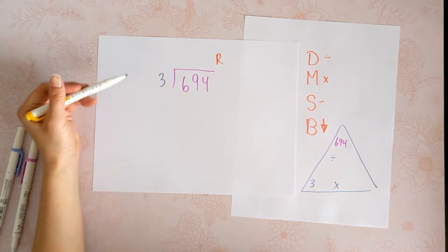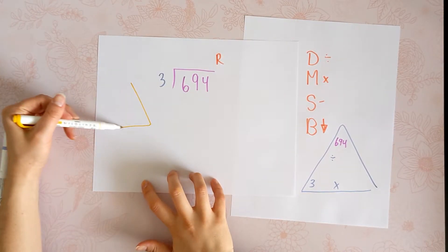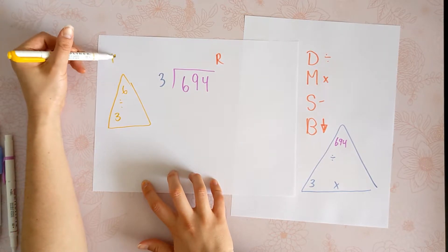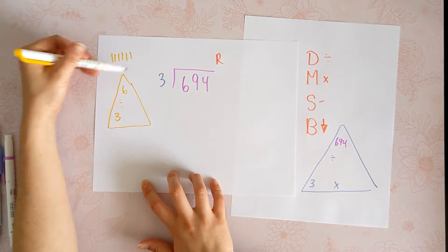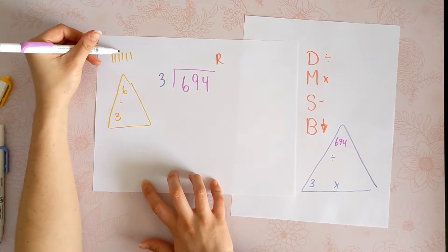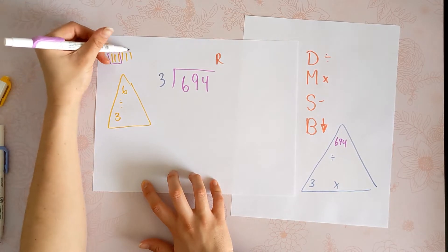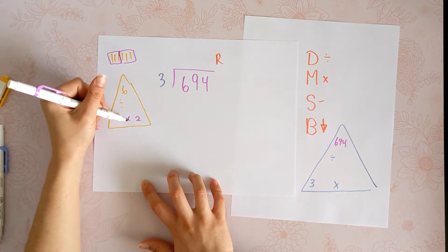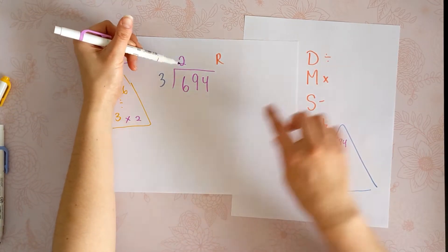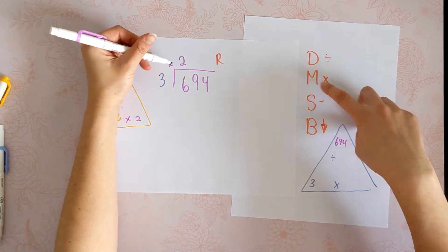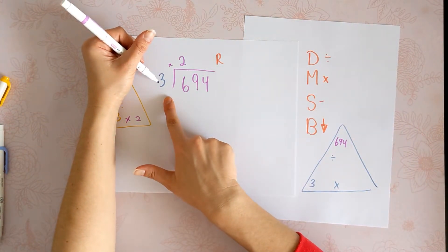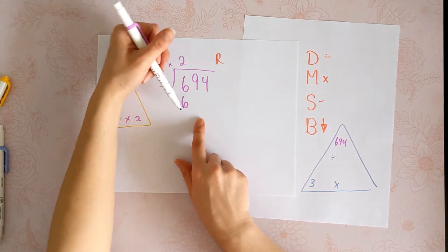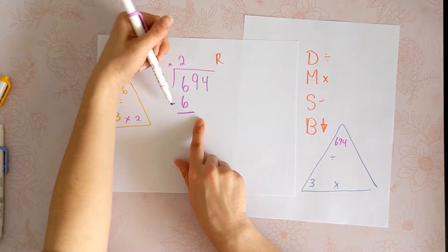First, we'll divide 6 divided by 3. How many 3s fit into 6? How many groups of 3 can I make? 2. I'll put that up here. Now I'm going to multiply 2 times 3, which is 6. And now I'm going to subtract, and I get a 0.